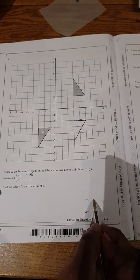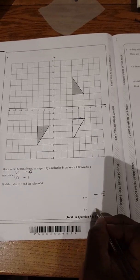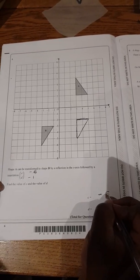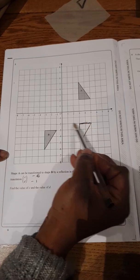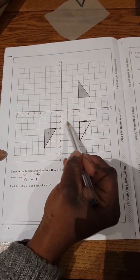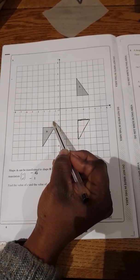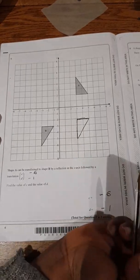So our C here will be negative 6, and our D here will be negative 1. Because all we've done is we've moved over. Translation is like sliding. So you just slide to that position, 6 units on the negative x-axis and 1 unit downwards.